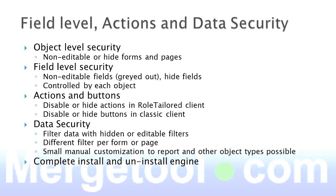The field level action and data security has more advanced features for objects as well. You can make an object — a form or page — editable, or you can completely hide it so a user can't even run the object. For fields, you can make them non-editable so they're grayed out and people can't type in them. You can also completely hide fields, and it can be controlled per individual object, so you can have a different setup on the sales order than on the sales credit memo. Actions and buttons can also be controlled — actions are the menu items in the RoleTailored client, while actions and buttons are in the Classic client. You can disable or hide them in the RoleTailored client, and in the Classic client you can disable or hide the complete button.